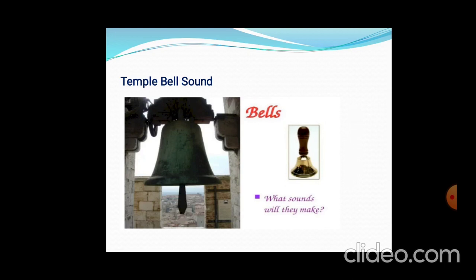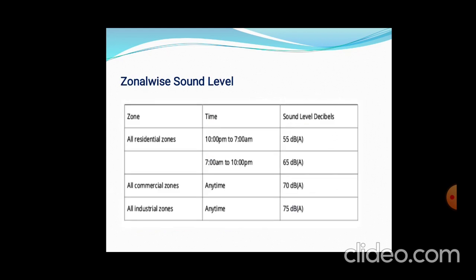A typical application of sound creation is the temple bell. The temple bell has a metal body; one metal impacts another metal, which creates the sound. There are also zonal sound levels — forest, residential, commercial, and industrial zones each have different sound levels.